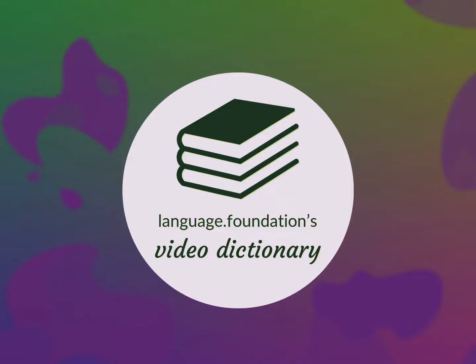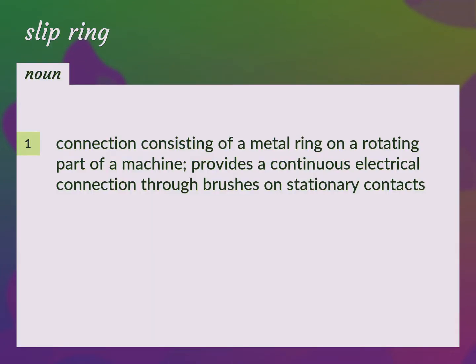Language.Foundation's Video Dictionary, helping you achieve understanding. Connection consisting of a metal ring on a rotating part of a machine provides a continuous electrical connection through brushes on stationary contacts.